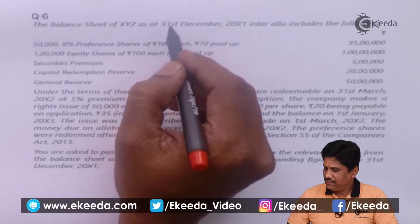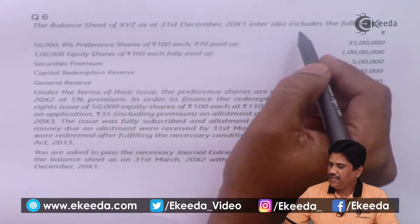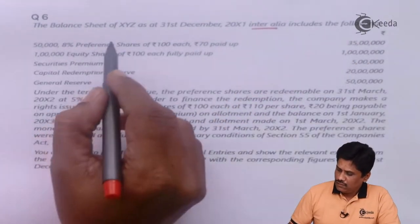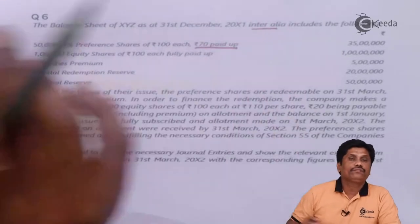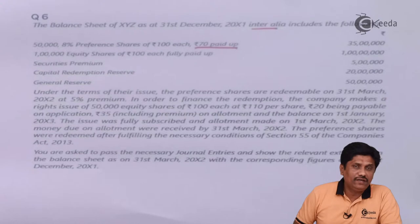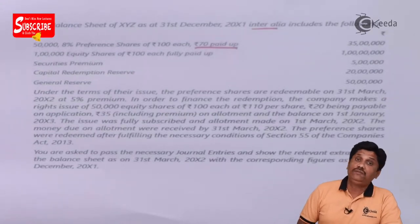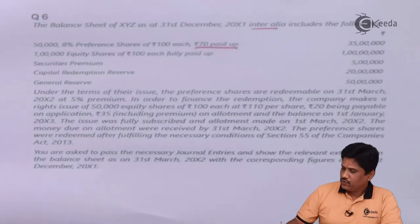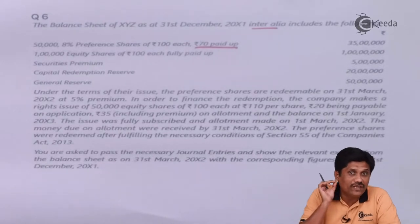Balance sheet of XYZ as on 31st December 2001 — Inter Alia means it is an extract — includes the following: 50,000 8% preference shares of Rs 70 paid up. This means shares are not yet fully paid up, and as per Section 55, they are not eligible for redemption until fully paid up.